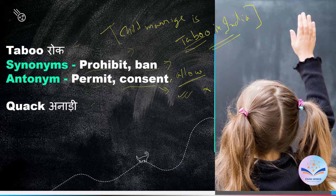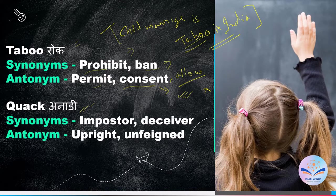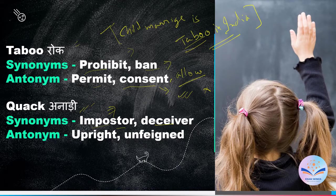Next word is 'quack'. The easiest way to remember quack is the duck — ducks go quack quack. So a quack is someone who is unexperienced in many fields. This is a very common slang in English. Synonyms are 'imposter' I-M-P-O-S-T-O-R — someone who is a fraud or pretending to know something they don't — and 'deceiver' D-E-C-E-I-V-E-R, meaning someone who deceives or cheats others. Antonyms are 'upright' U-P-R-I-G-H-T and 'unfeigned' U-N-F-E-I-G-N-E-D — someone who is honest and straightforward.